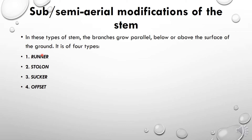The second type of stem modification is sub-aerial or semi-aerial modification. Sub-aerial or semi-aerial modifications are branches that are partially below or above the surface of the ground — not very high from the ground. There are four types: runners, stolons, suckers, and offsets.